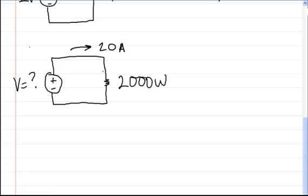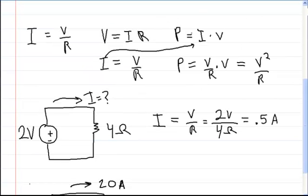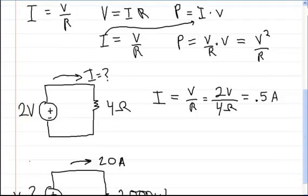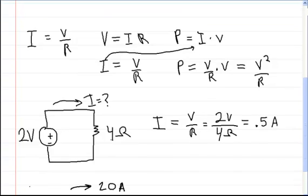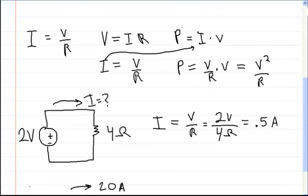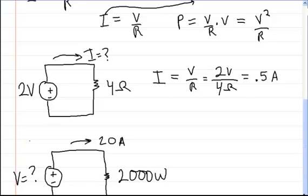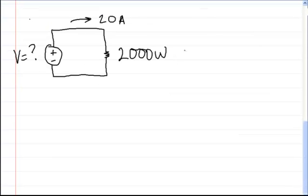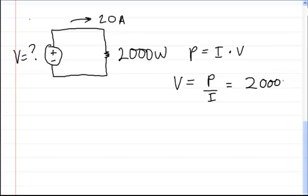How do you find the voltage? We can use the power equation P = I × V. We know the power and we know the current, so we rearrange to get voltage equals power divided by current. The power is 2,000 watts divided by 20 amps, which equals 100 volts. So you have a 100-volt power supply.